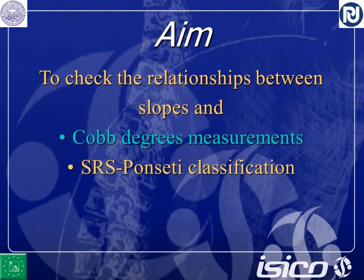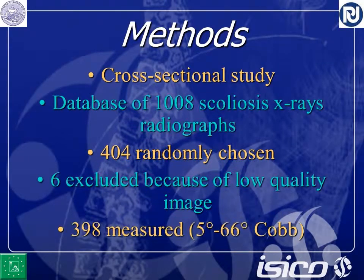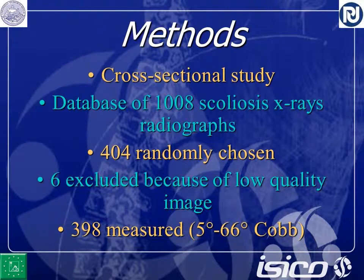We aimed to check the relationship between slopes and Cobb degrees, and this Lenke responsivity classification. It was a cross-sectional study. We used the entire database of our patients, including radiographs and photographs. Four hundred were randomly chosen; in reality all 1,000 are being measured by three observers, but this is just a presentation of the first observer as we are doing a much larger study — just to check if there is something there.